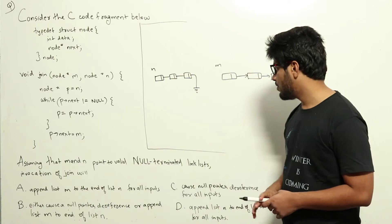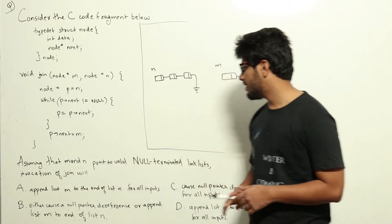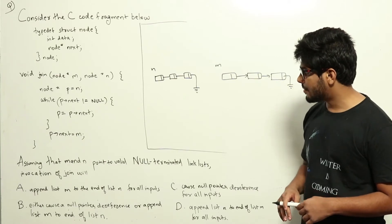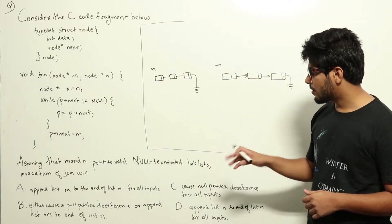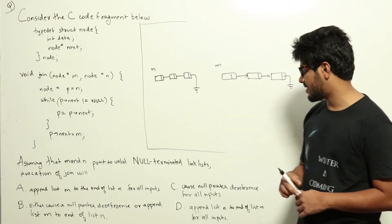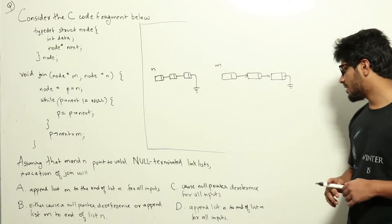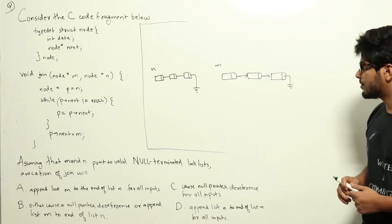Assuming that M and N point to valid null terminated link lists, invocation of join will: A. Append list M to the end of list N for all inputs. B. Either cause a null pointer dereference or append list M to the end of list N. C. Cause null pointer dereference for all inputs. D. Append list N to the end of list N for all inputs.